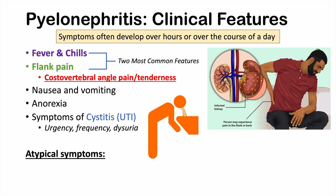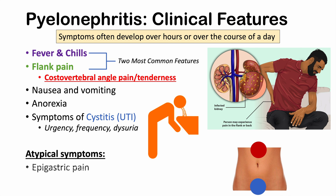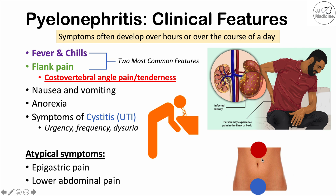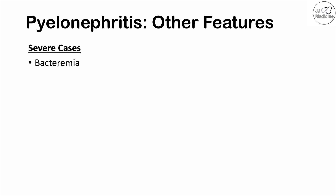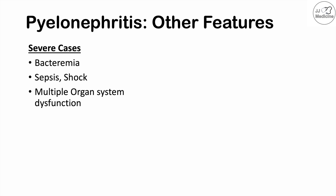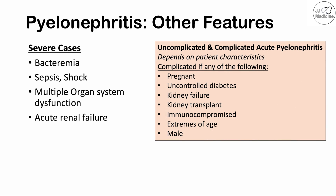There are also atypical symptoms that are less common, including epigastric pain — in the center of the abdomen above the belly button — and lower abdominal pain. In severe cases, features include bacteremia, which can lead to sepsis and shock, multiple organ system dysfunction, and even acute renal failure.